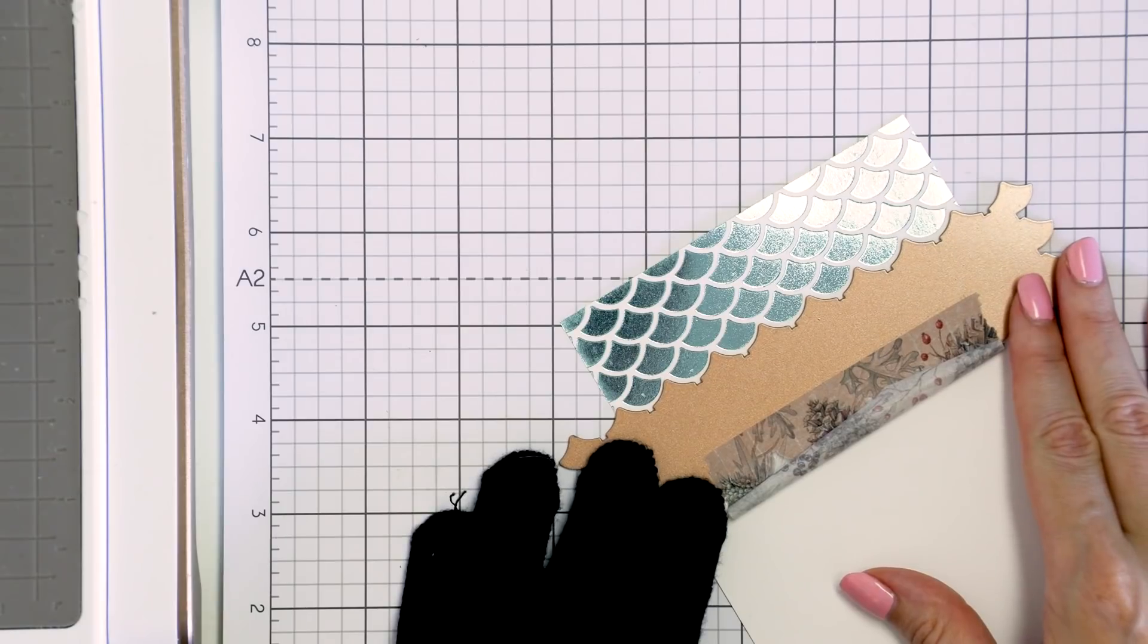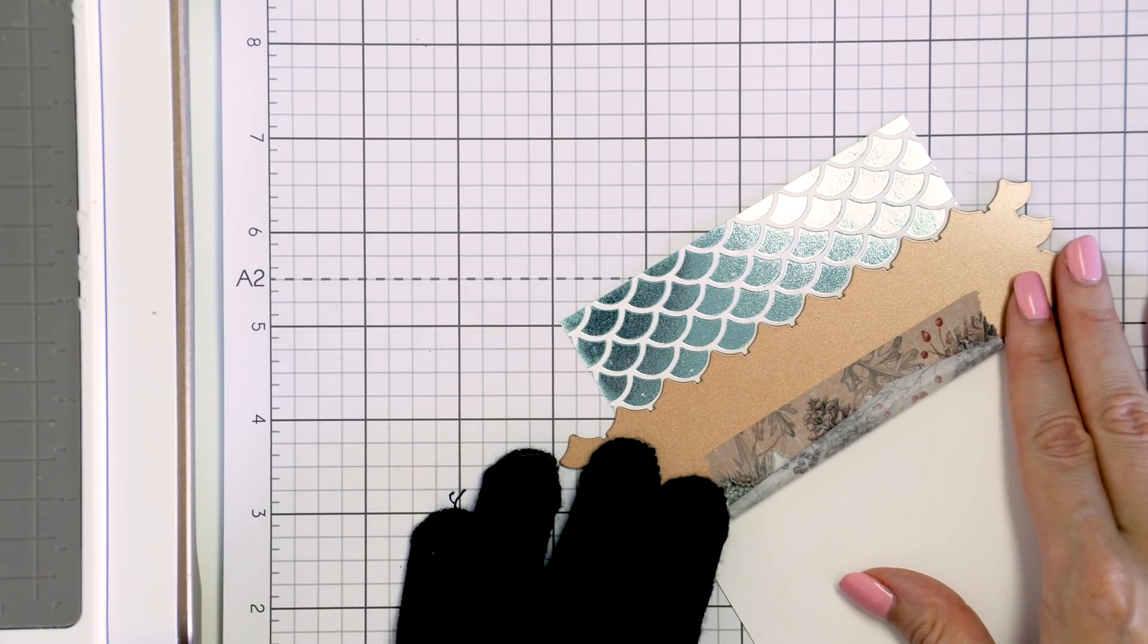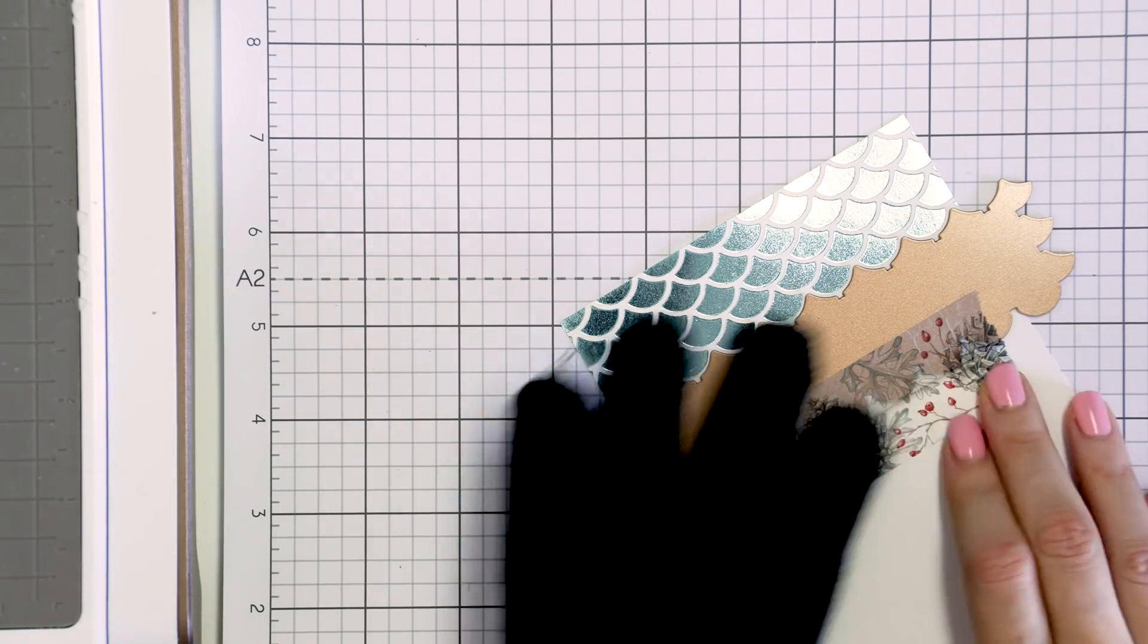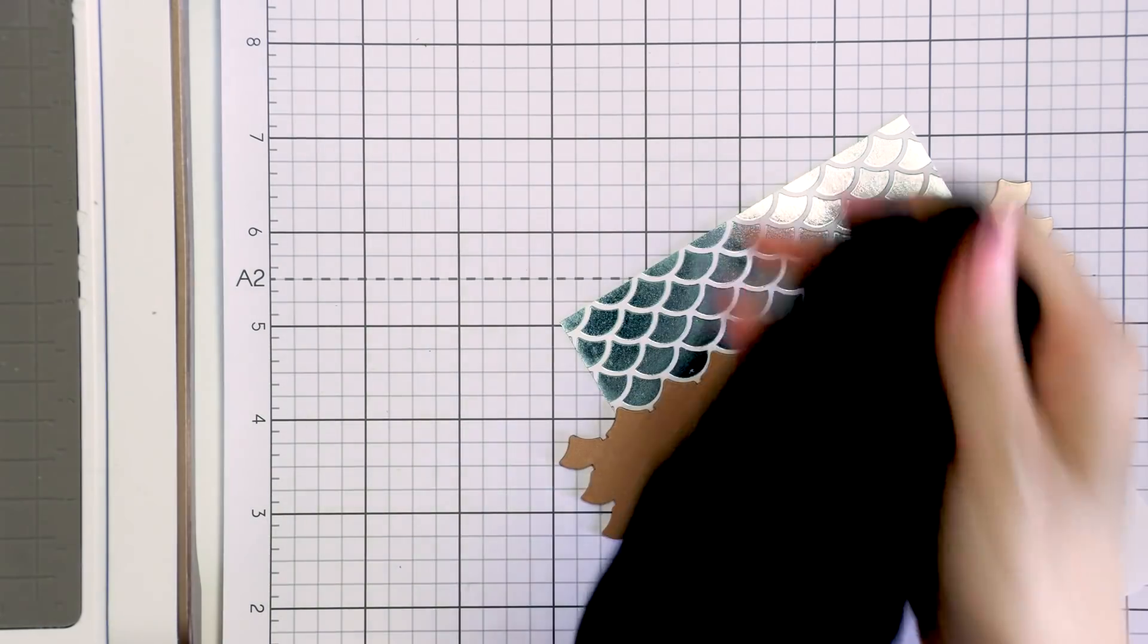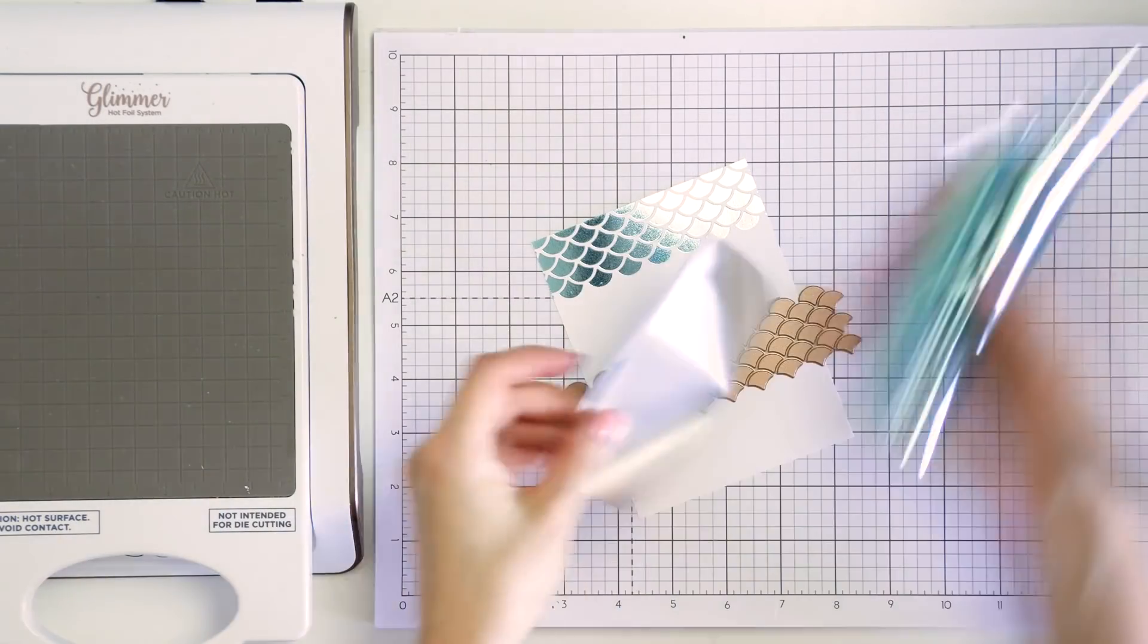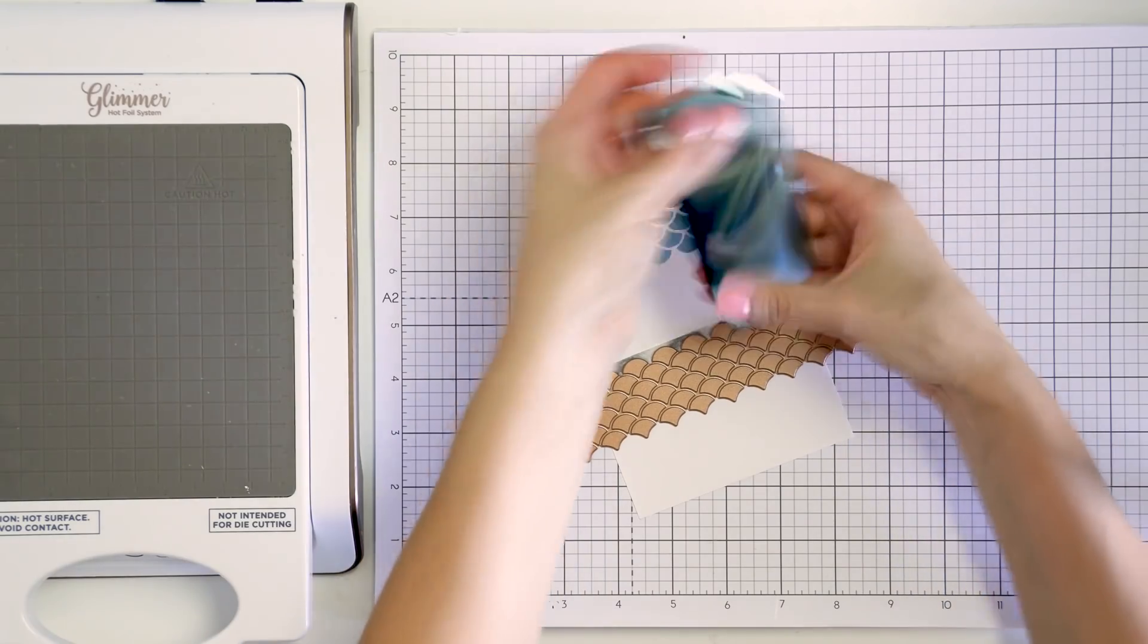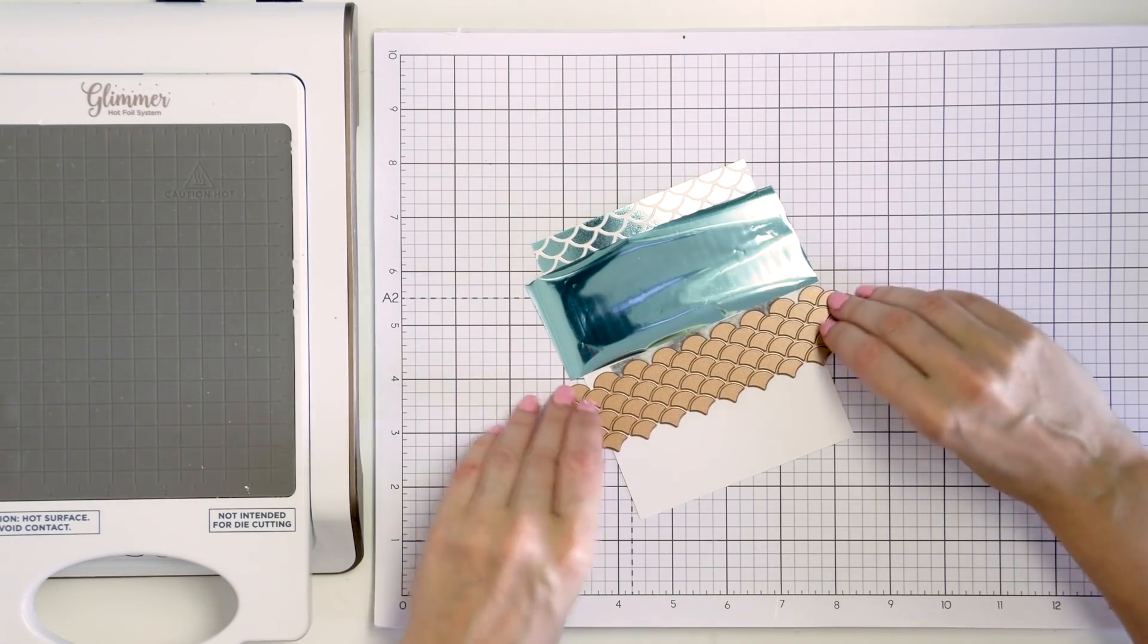Having the glove on makes it very easy to move the glimmer plate and position it where I need it. The glove is needed just for the first couple of seconds when the plate is very hot. The plate cools off pretty quickly. I'm going to repeat the process, cut the foil, add it under the plate, place the plate on the glimmer machine, wait for the timer to heat up the plate, pull the platform out of the docking station and reinsert it to heat it up again.